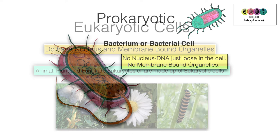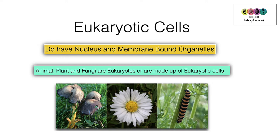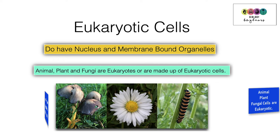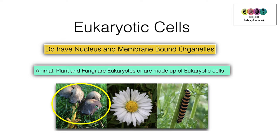Eukaryotic cells do have a true nucleus surrounded by a membrane and they do have membrane-bound organelles. Examples include animal, plant, and fungal cells — all eukaryotic. So a mushroom (fungus), a daisy (flower), and a caterpillar (animal) are each made up of many eukaryotic cells.